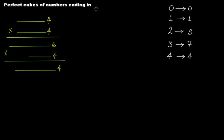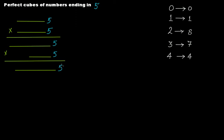For numbers ending in 5, it's quick: 5 times 5 is 25 — so 5 at the units place and 2 carried over. Multiplying by 5 again gives 5 times 5 is 25 again — so 5 at the units place. If your number ends in 5, the perfect cube will also end in 5.